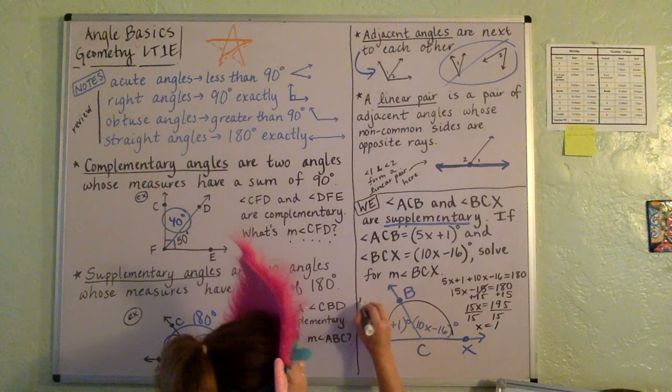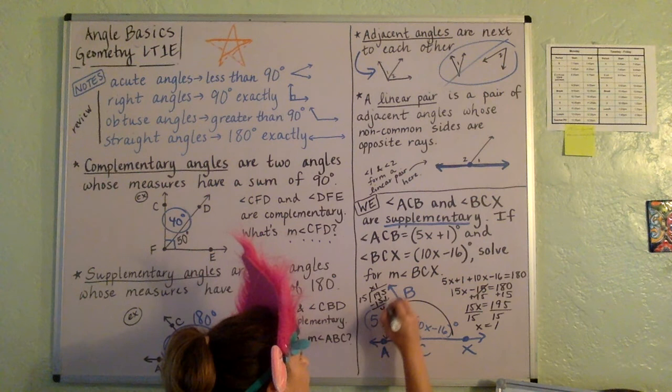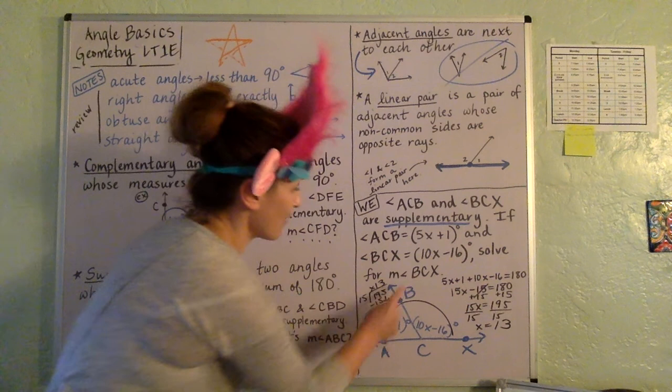And we'll divide both sides by 15, and we'll get that X equals, let's see, let me just do some little quick division here. 15, 4, that's 45. I think it's going to be 13. Now, let's just go back to the problem, remember? We weren't just trying to solve for X. We were actually trying to solve for the measure of angle BCX, so BCX.